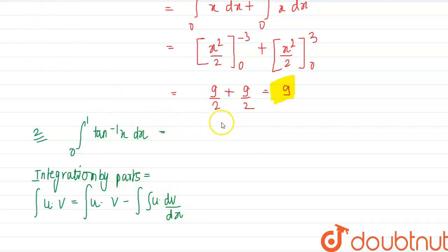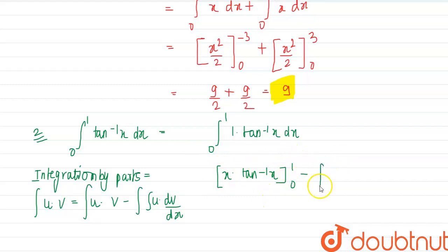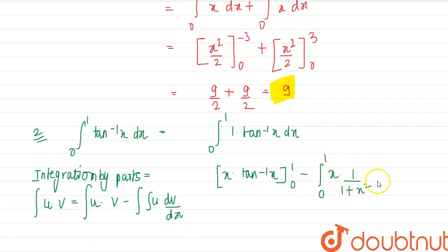Applying this to ∫₀¹ 1 · tan⁻¹x dx — since integration of 1 is easy — we get: [x · tan⁻¹x] from 0 to 1, minus ∫₀¹ x · (1/(1 + x²)) dx.